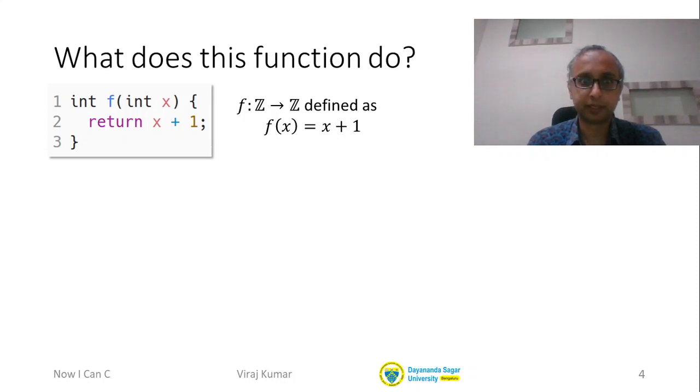Let's compare the C code on the left with the math on the right and see where the similarities are. This 'int' that we write next to the x represents the first ℤ, the domain of the function. So this function f in C takes one integer argument x.